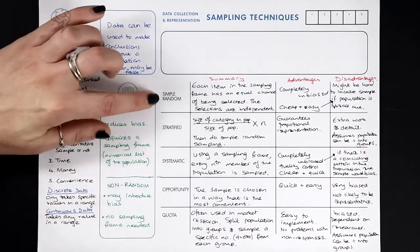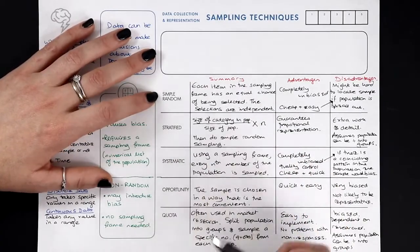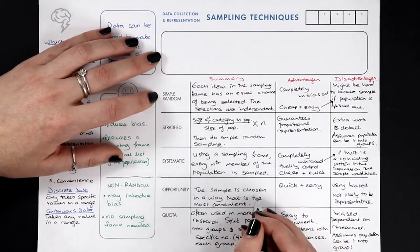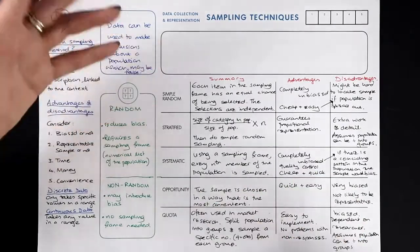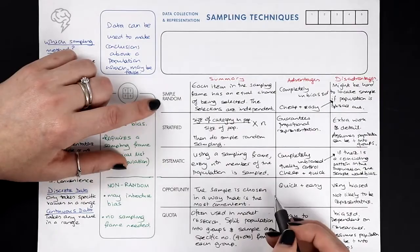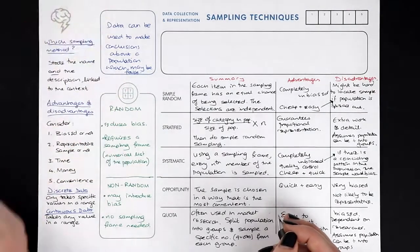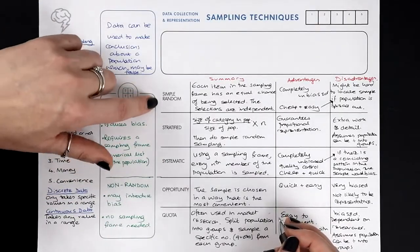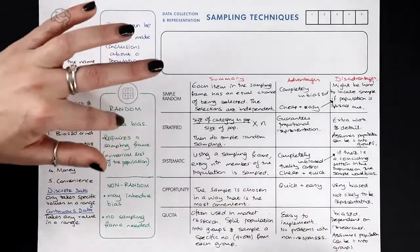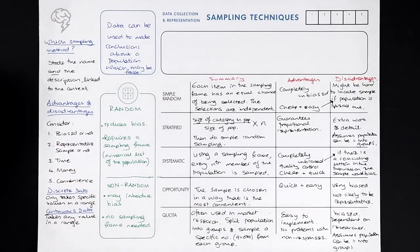One final point on simple random sampling: if your random number generator produces a number you've already selected, just ignore it and generate another. This relates to sampling without replacement — we don't want the same sampling unit appearing twice. You can use random number generation with replacement and simply skip repeats, or sample without replacement directly, but this does assume the population is large enough.